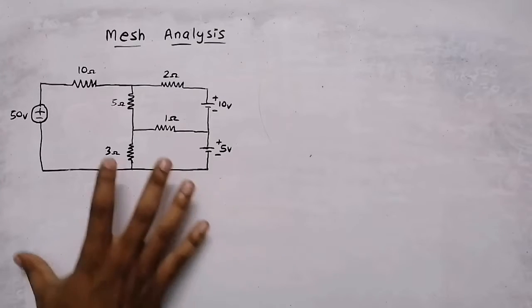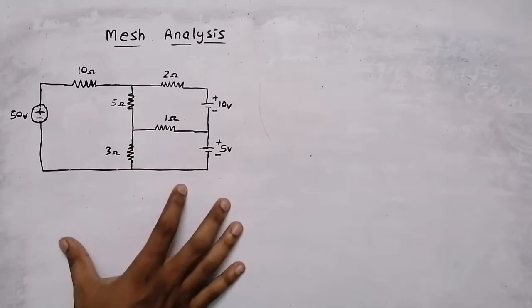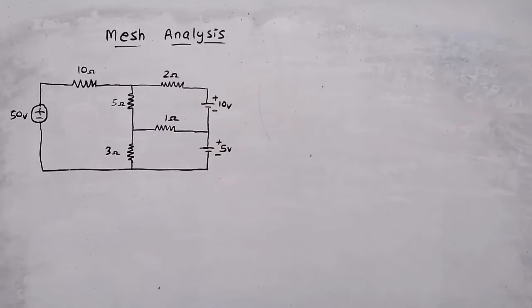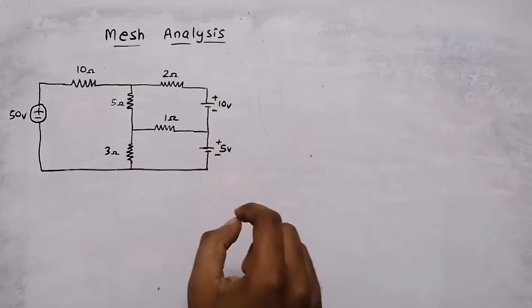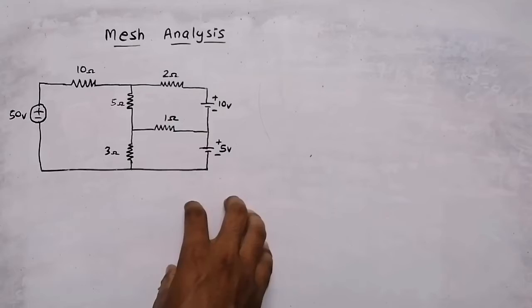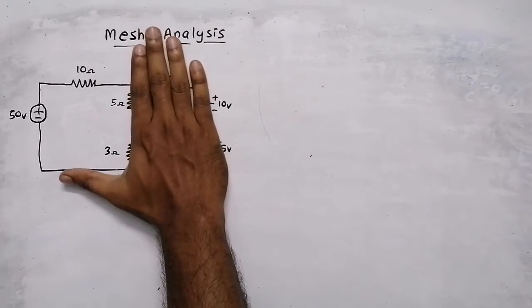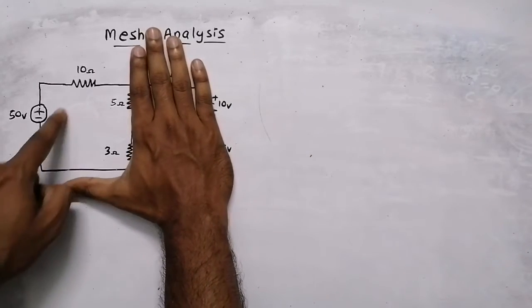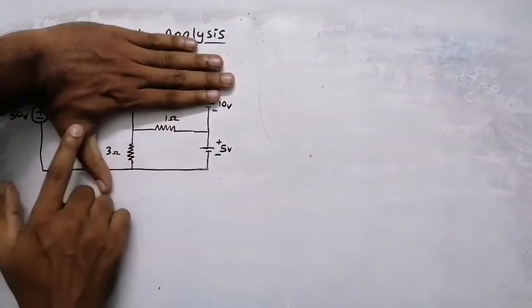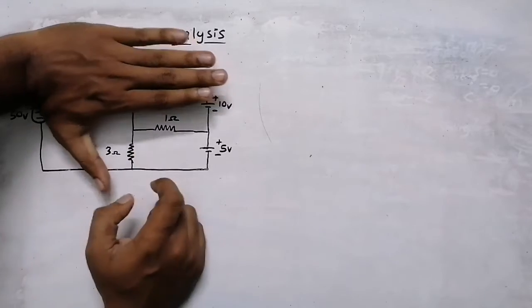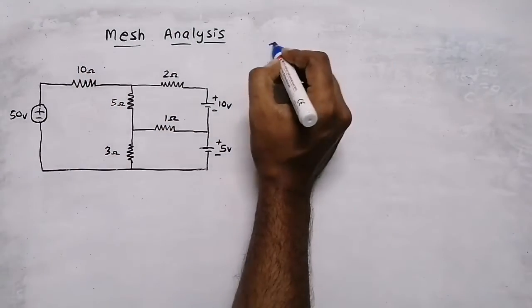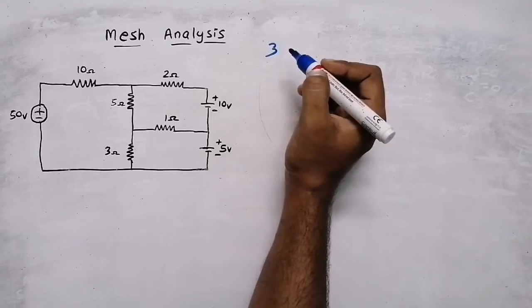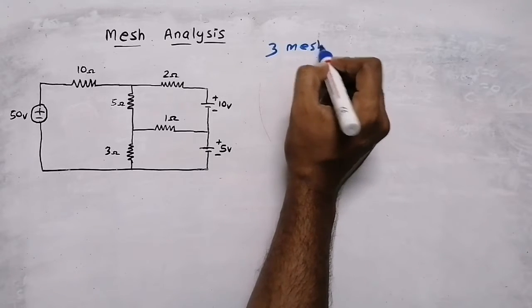In this video, we are going to find the solution of this network using mesh analysis. In mesh analysis, the first step is to identify the number of meshes. For identifying the number of meshes, check the number of closed circuits. Here there is one closed circuit, then this one is a closed circuit and this one is a closed circuit. So totally there are three closed circuits, so there are three meshes.